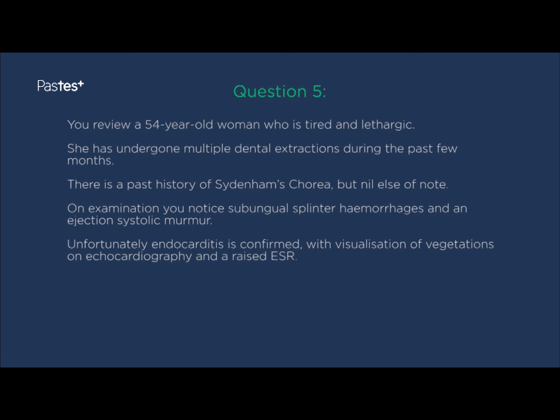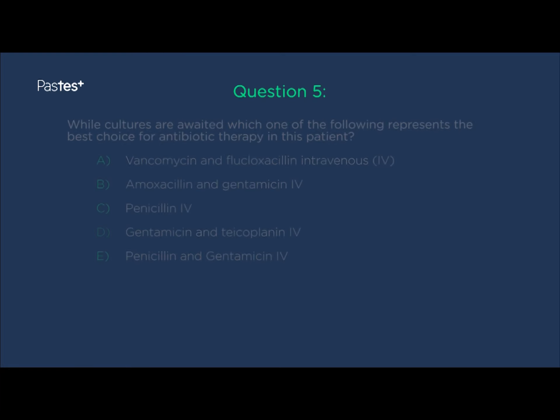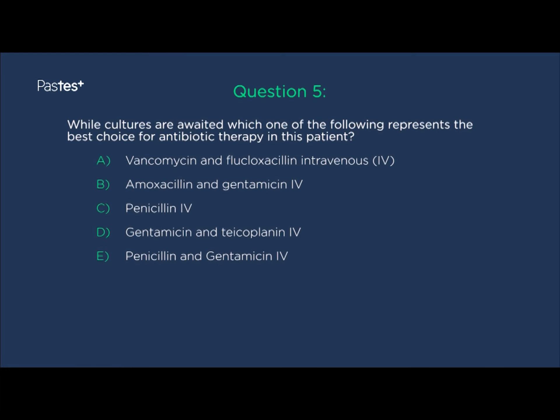The second stem to this question is question five: while cultures are awaited, which of the following represents the best choice for antibiotic therapy in this patient? If you went for option E — penicillin and IV gentamicin — you'd be correct.